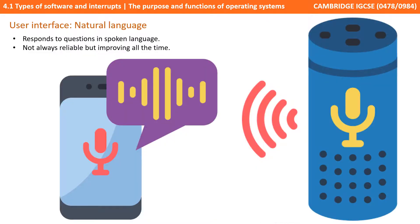A user interface that's gaining popularity today is the natural language interface — the idea that you can actually speak in your natural language into a computer system, so it responds to questions said in spoken English. The historical problem with these interfaces is they're often not very reliable, but the technology is certainly gaining in pace and accuracy. Siri, Cortana, Hey Google, and Alexa are all examples of this. And it is pretty cool to be able to say to a device, 'Hey Siri, what's the weather today?' or 'Alexa, how many emails haven't I read?'